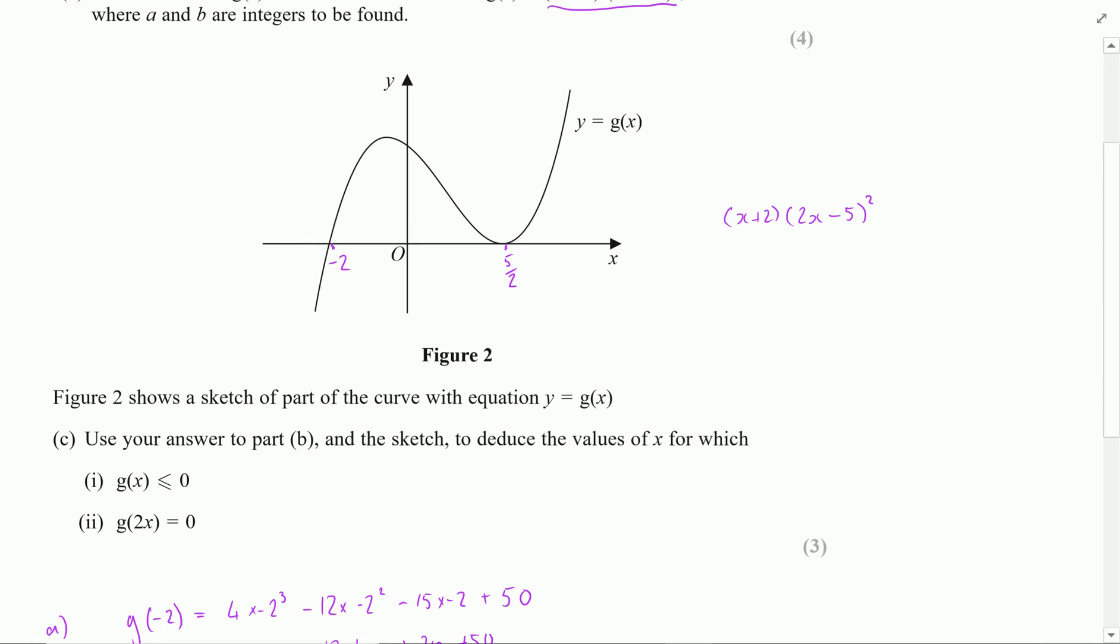I want to use that answer to deduce the values for which g of x is less than or equal to 0. Now foxy little question this one because I've got all of the values here where it's going to be less than or equal to 0. I also have this value here where it's equal to 0.